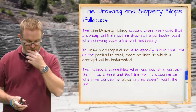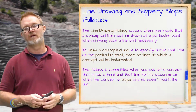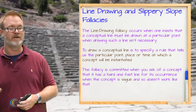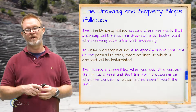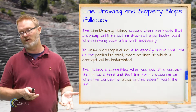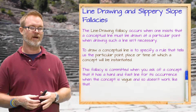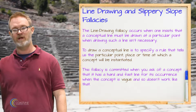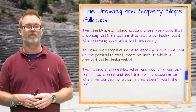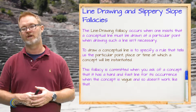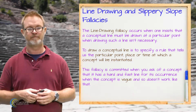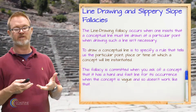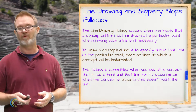Another example is the concept 'bald.' It's not like if you have 500 hairs you're not bald, and if you have 499 you are. The concept doesn't work like that. It's clear that if you have no hair you are bald, and if you have a full head of hair you're not — but when exactly someone becomes bald isn't so clear. The mistake with line drawing is asking of concepts like that that they are definitive and clear, when you're not really allowed to do that.